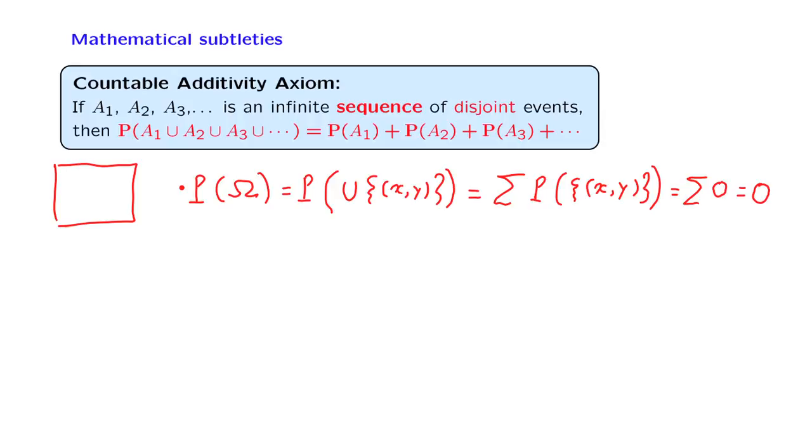On the other hand, by the probability axioms, the probability of the entire sample space should be equal to 1, and so we have established that 1 is equal to 0. This looks like a paradox.